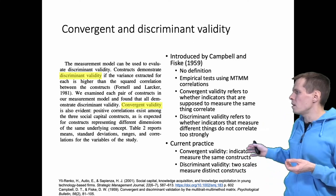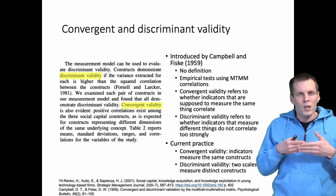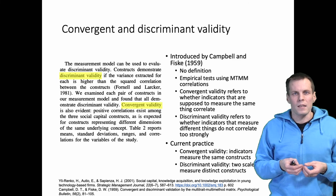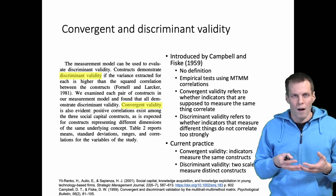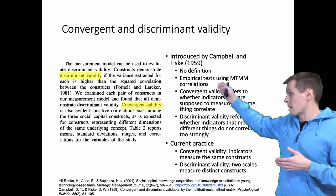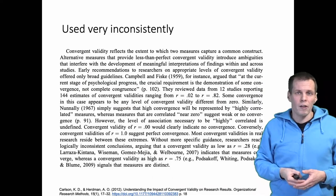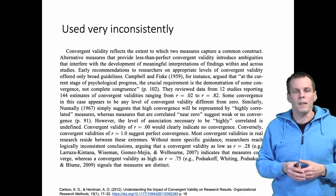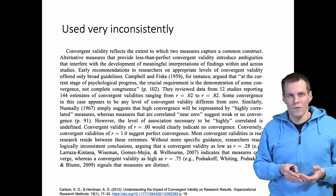Because of this evolution in meaning, current practices around discriminant validity and convergent validity statistics and evaluation are actually quite far from the original work by Campbell and Fisk. These terms are also used very inconsistently — not only are the statistical procedures quite different from what was originally proposed, but what counts as a 'high' correlation also varies.